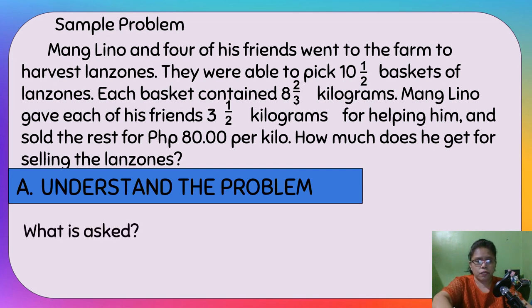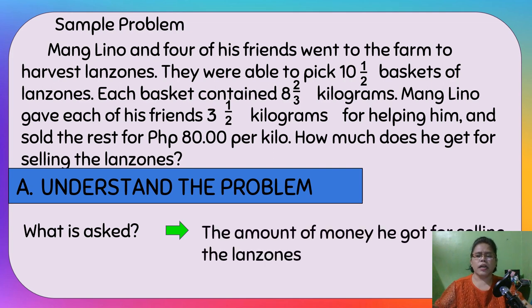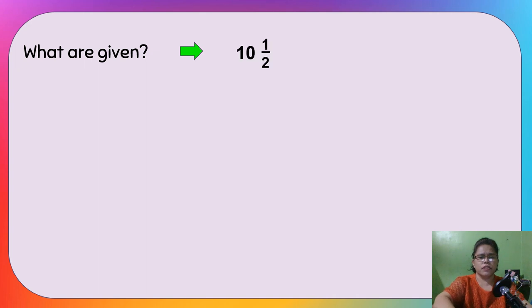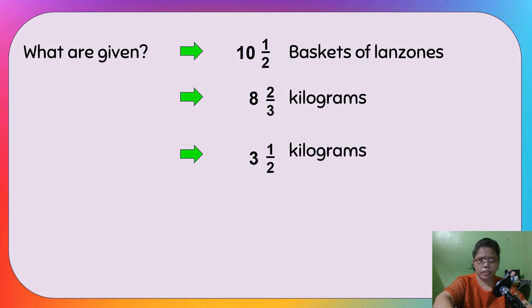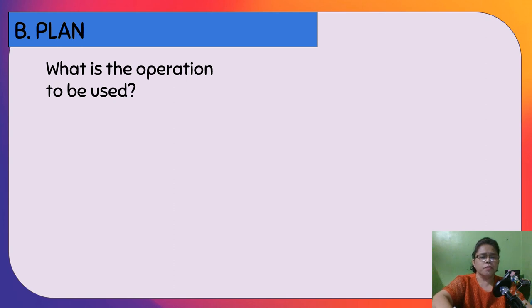They sold the rest for 80 pesos per kilo. How much does he get for selling the lanzones? Understand the problem: we are looking for the amount of money Mang Lino got for selling lanzones. Given: 10 1/2 baskets, 8 2/3 kilograms per basket, 3 1/2 kilograms given to each of 4 friends, and 80 pesos per kilo.